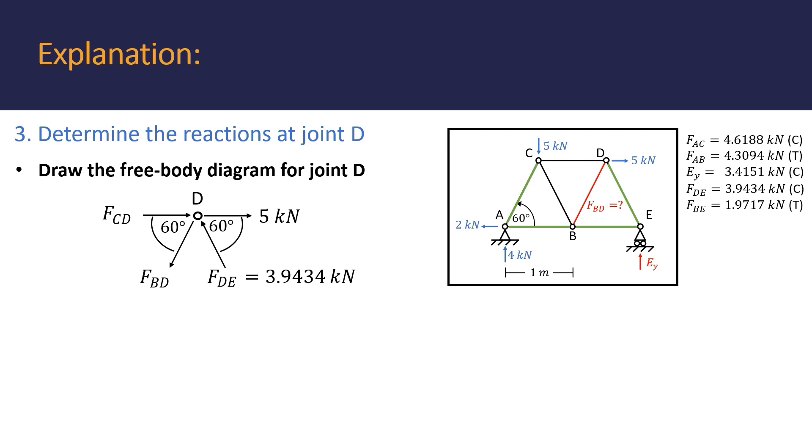We start off by drawing the free body diagram for joint D again, ensuring that we draw force DE as a compression force, since this is what it was found to be while evaluating joint E. Choosing the correct direction for this force is crucial, since choosing the opposite would result in errors in your calculation. It could always be chosen as a tension force, but this would require you to substitute its known force as a negative value. Whichever you decide to do, I highly recommend you choose a convention that you're comfortable with and stick to it.